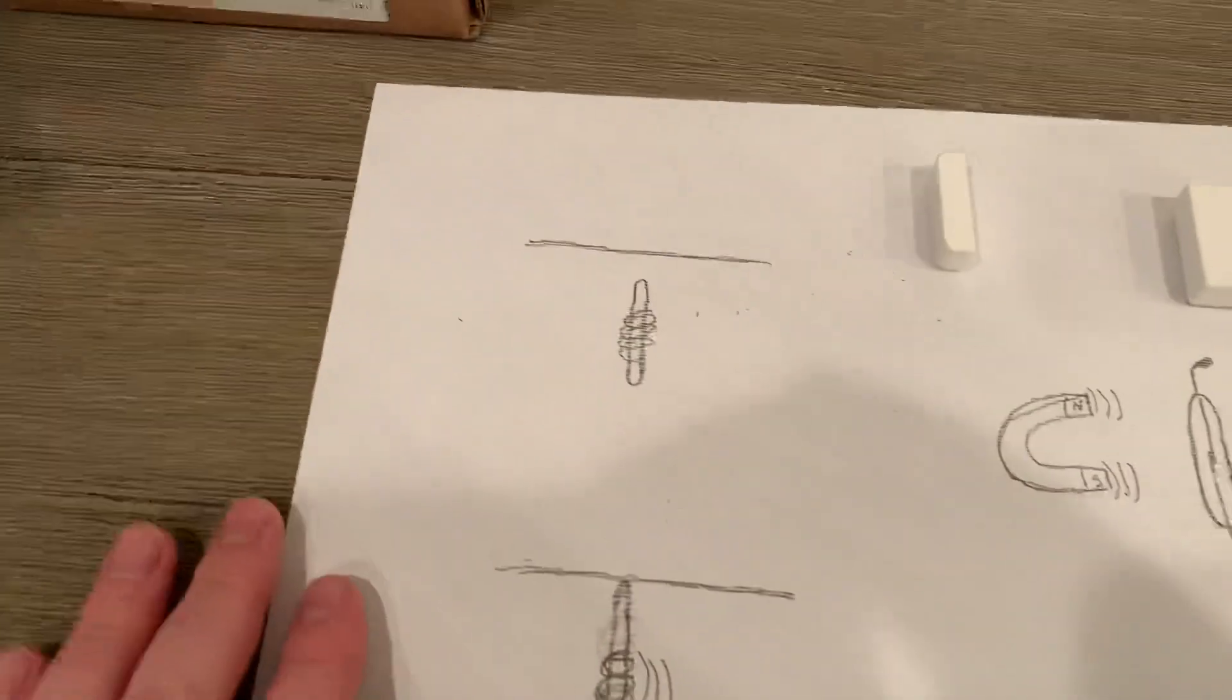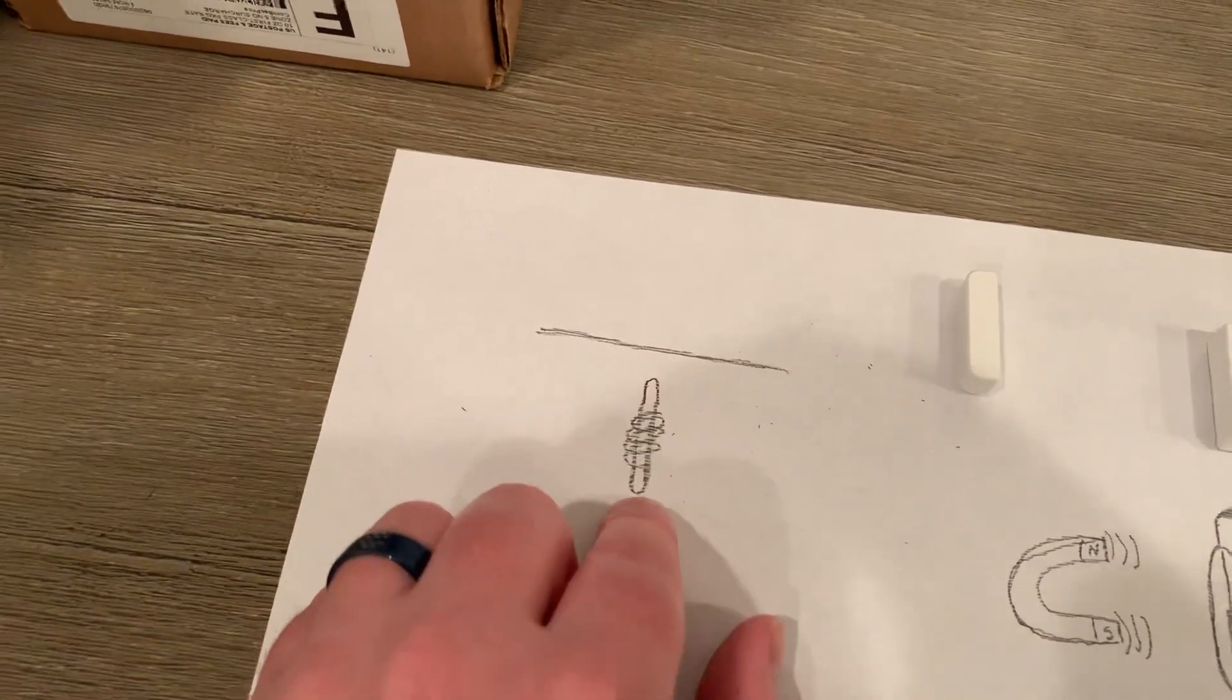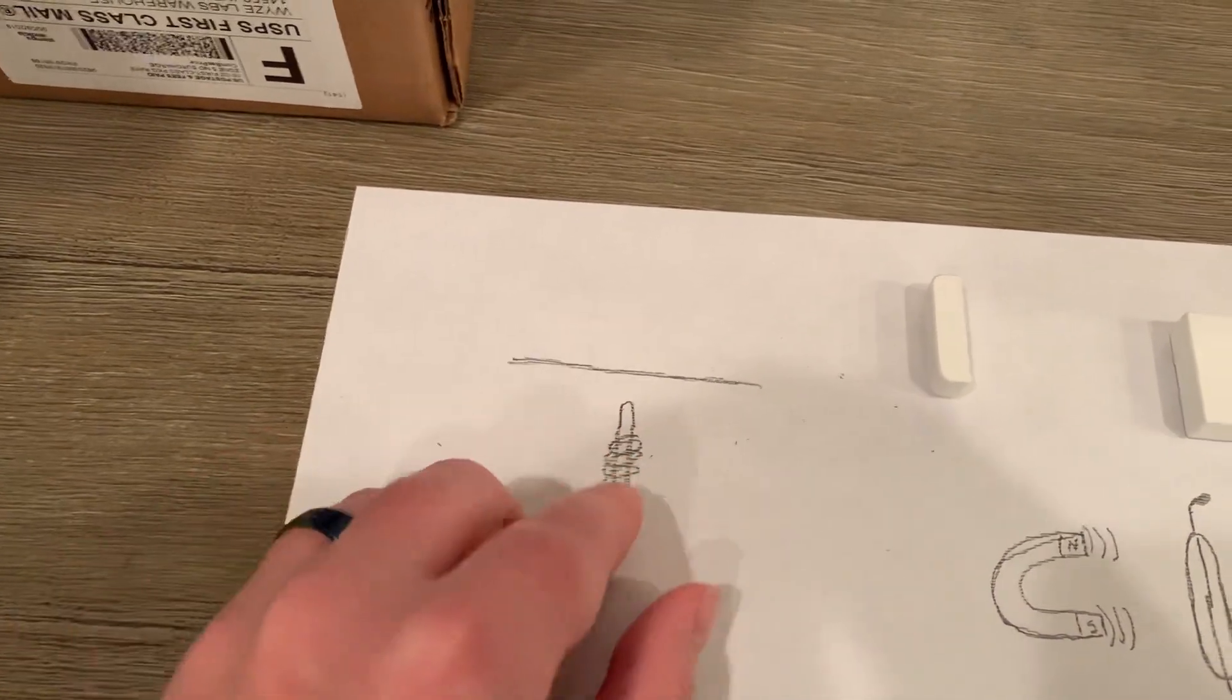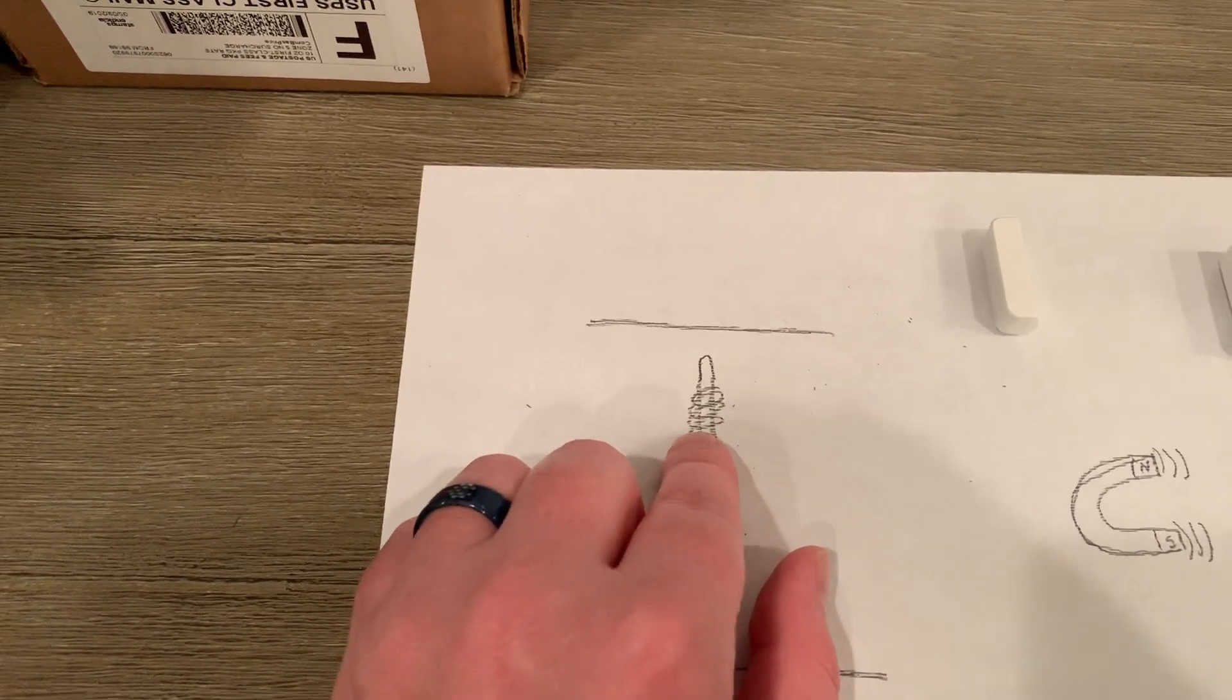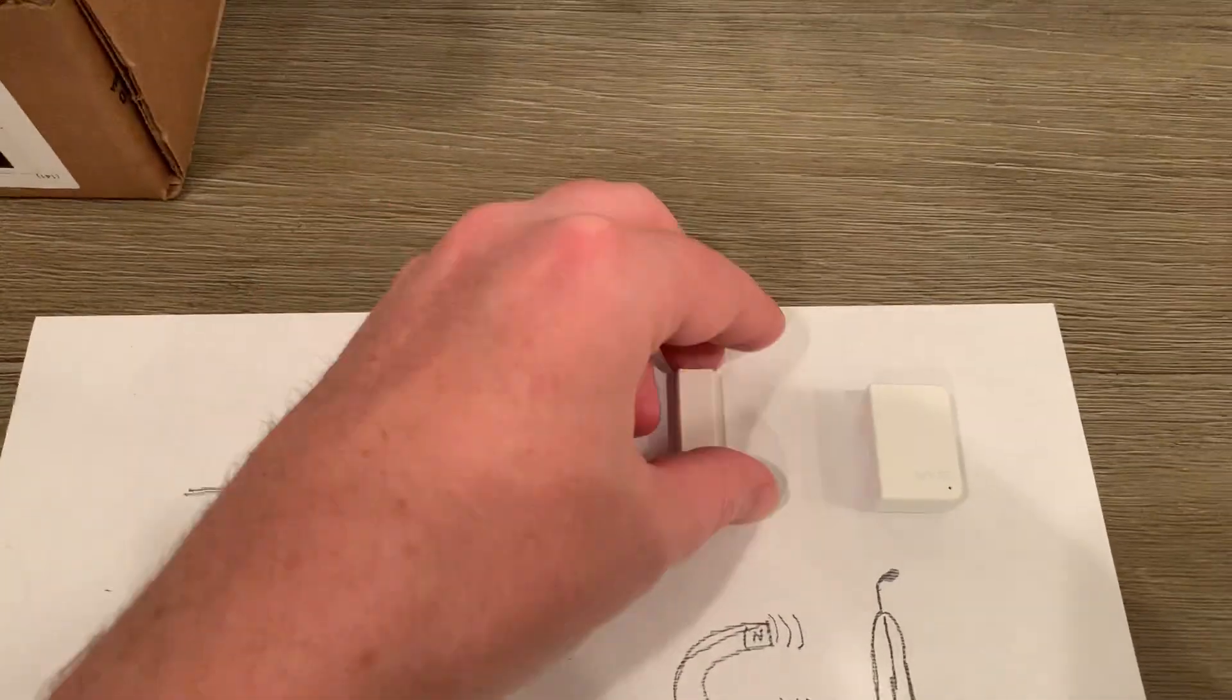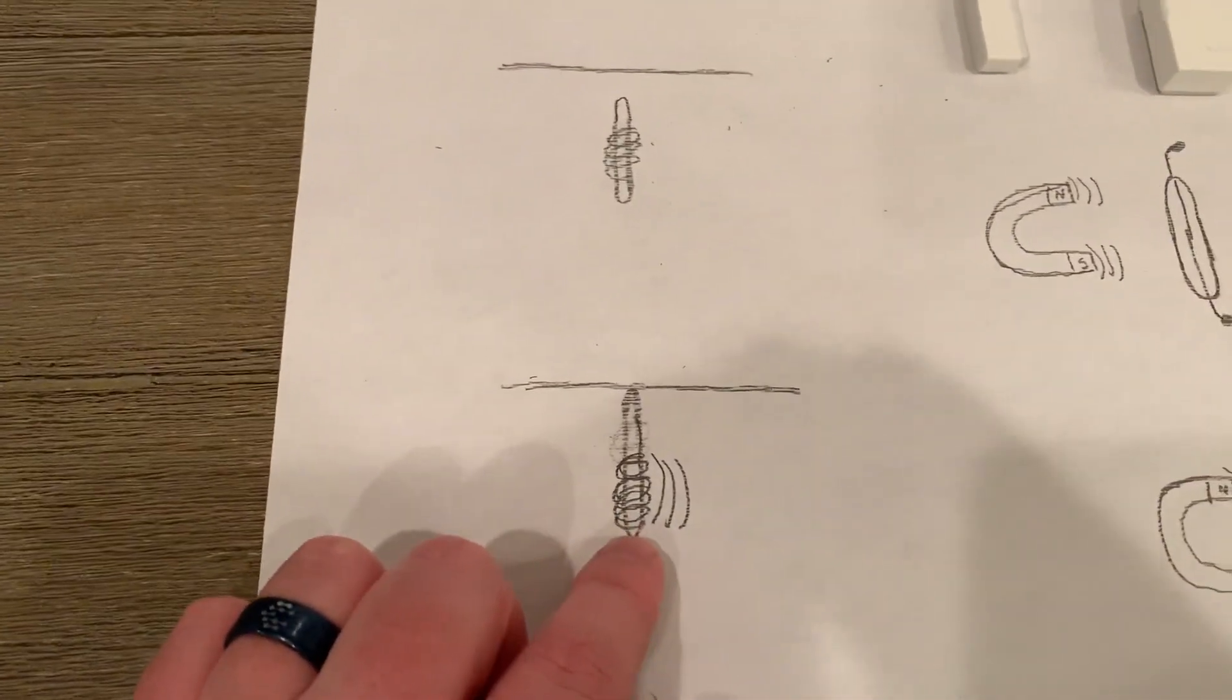Understanding how a doorbell chime works, you have your chime, your piece of metal at the top, and essentially just a little rod that has an electromagnet around it. When it's just sitting there, there's no electric or magnetic field being generated. But when the doorbell is triggered, it generates a magnetic field.